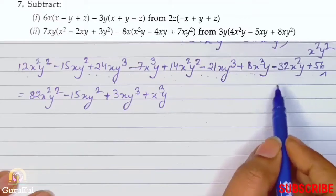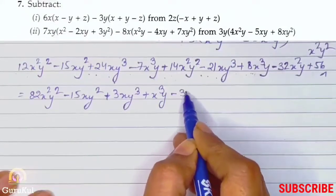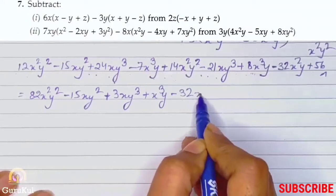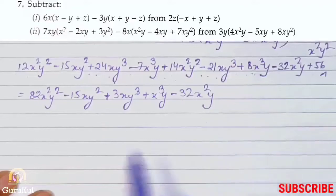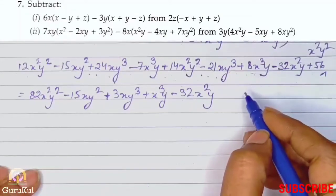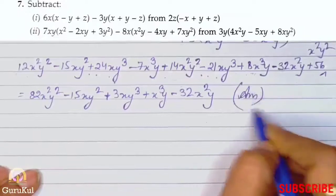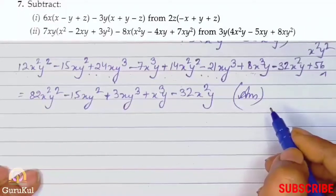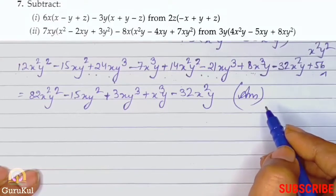And last remaining is minus 32x²y. With this we come to the end of exercise 10.2. Thanks for watching the channel Gurukul.